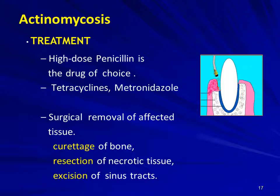Treatment of actinomycosis: high-dose penicillin is the drug of choice. Tetracyclines and metronidazole can also be used. The next modality is surgical removal of affected tissue by curettage of bone, resection of necrotic tissue, and excision of sinus tracts, all of which can be done by a dentist to remove actinomycotic material from infected tissue.